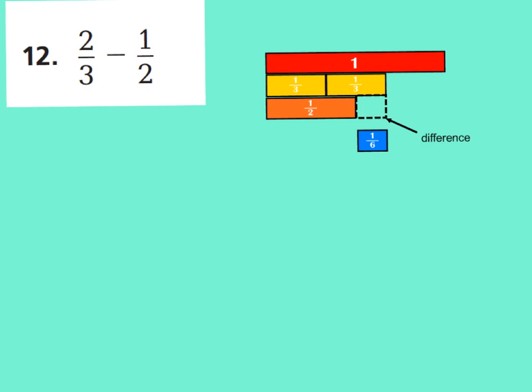All right, let's go ahead and walk through number 12 together. Number 12 says 2 thirds minus 1 half. I went ahead and set up 2 thirds. And, directly below it, I put down 1 half. And, we're going to find this leftover portion. Now, as you can see, 3 and 2 are not the same denominators.